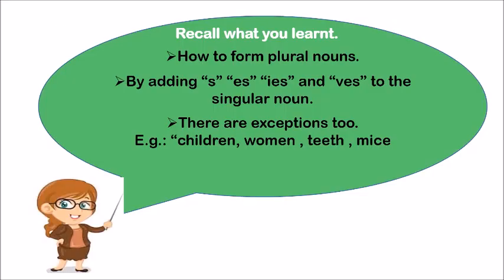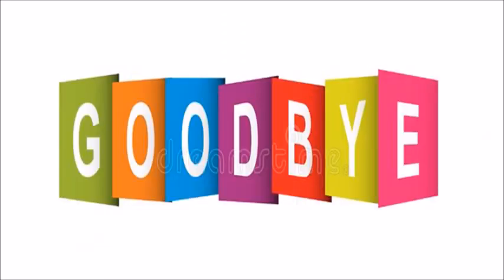Can you recall what we learned today? How to form plural nouns: by adding S, ES, IES, and VES to the singular noun. There are exceptions — children, women, teeth, mice — these are some examples. So that's the end of another lesson. Let's meet again with a new lesson. Goodbye, children.